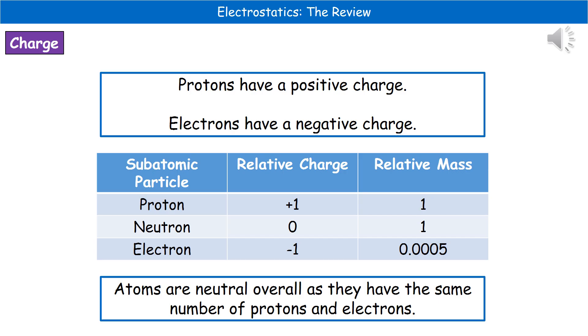To do that, we need to go back to the work we did in P1, looking at the subatomic particles and the different charges they have associated with them. Protons have a positive charge and electrons have a negative charge. I've put the little table in there that we did back in P1 just as a reminder about the relative charge and relative mass of the three subatomic particles.